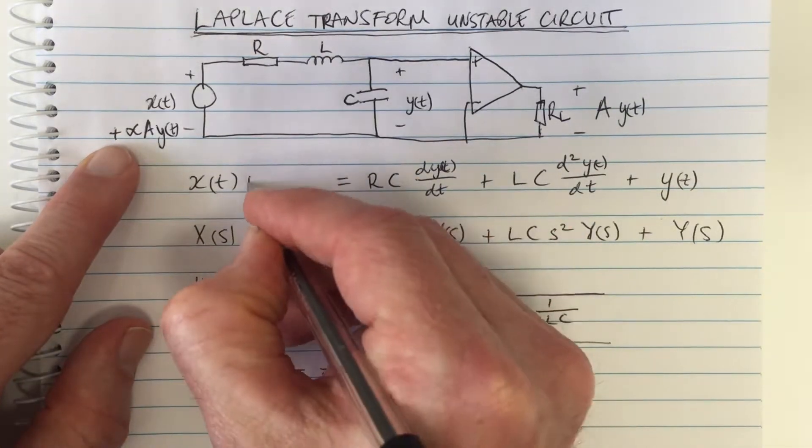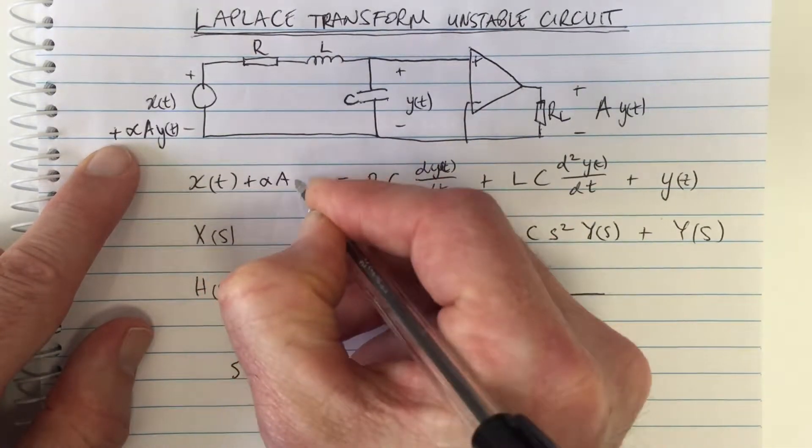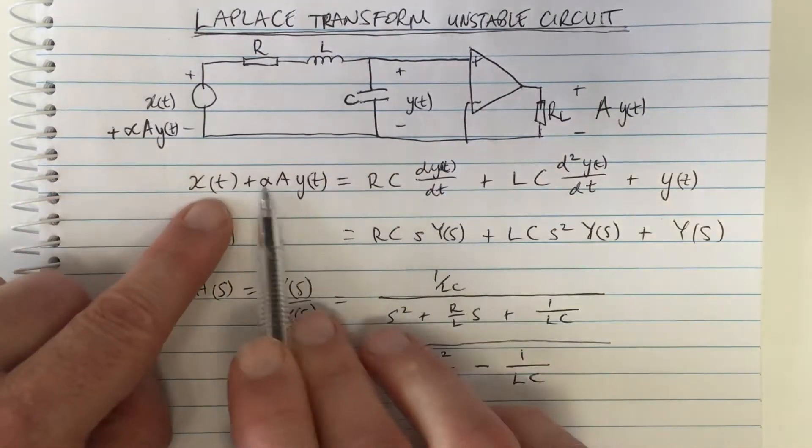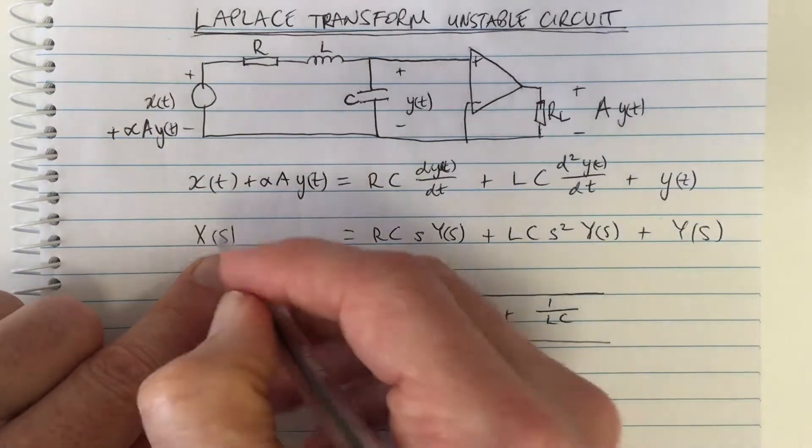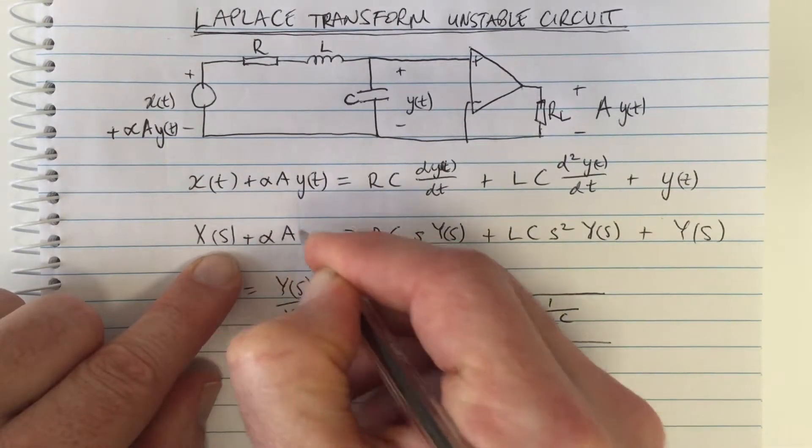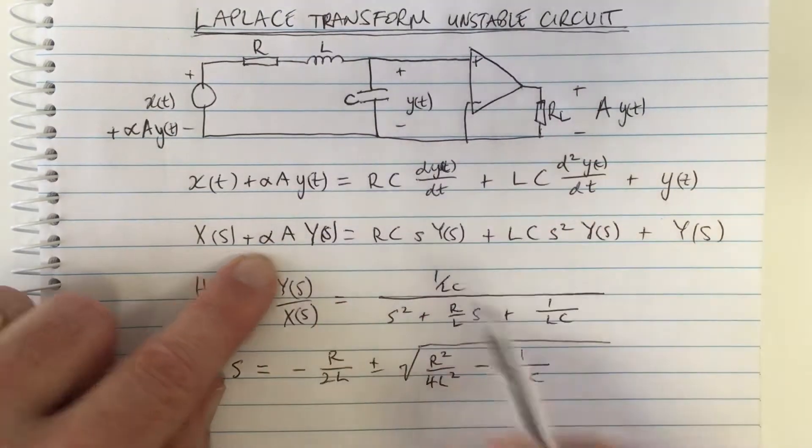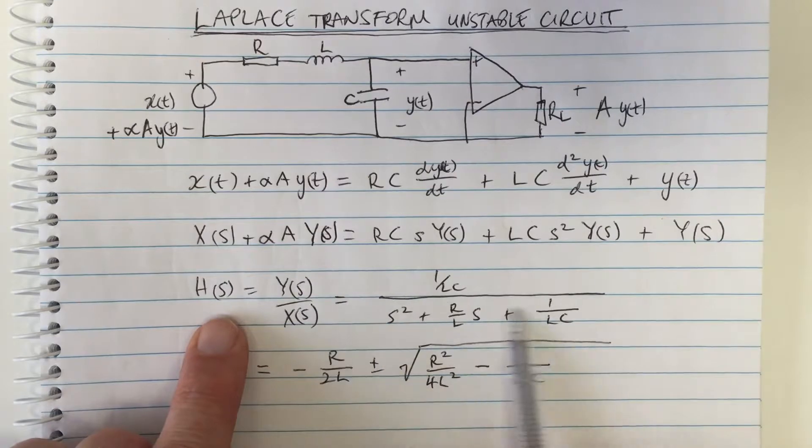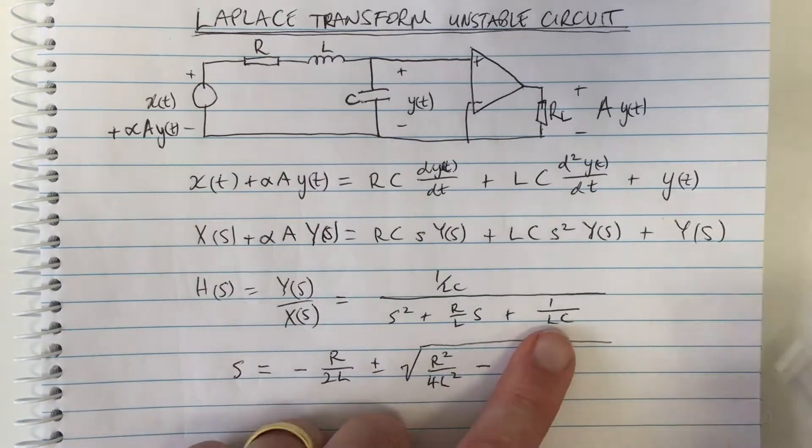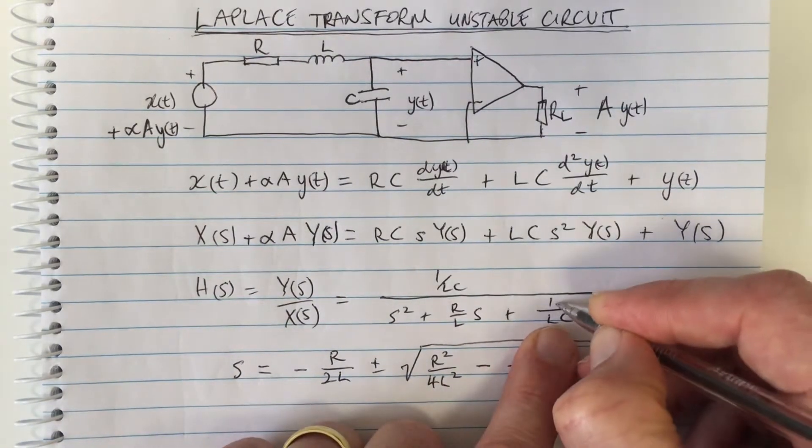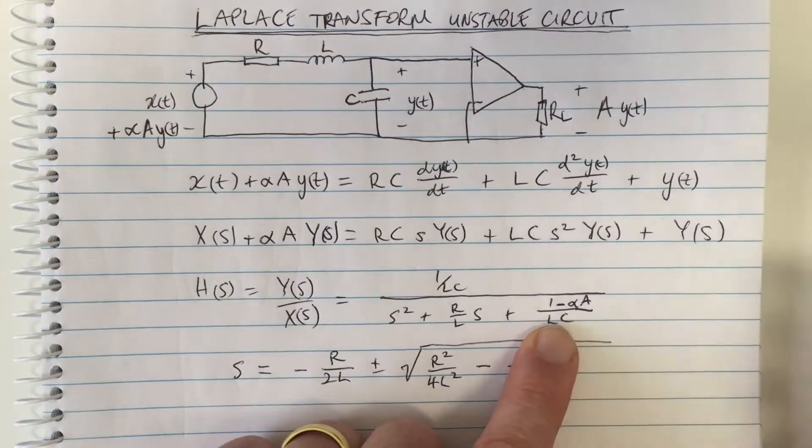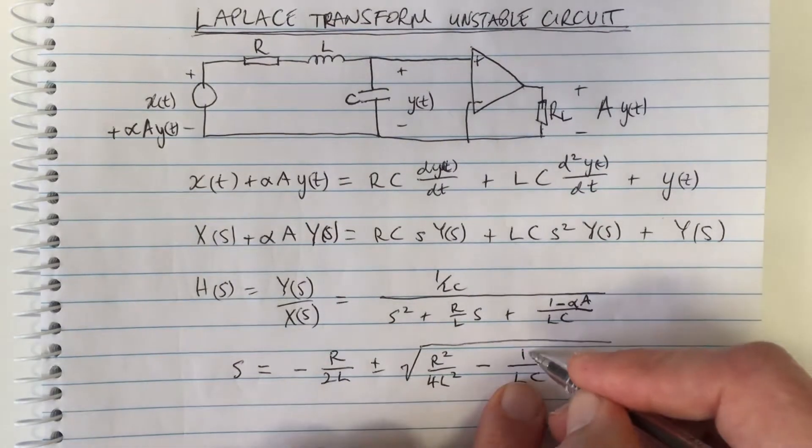In the ideal amplifier there's no current going in here, so we have the same expression before except now we have plus alpha A y(t) in our differential equation. This means we have plus alpha A Y(s), writing this with Laplace s. We have the same transfer function.